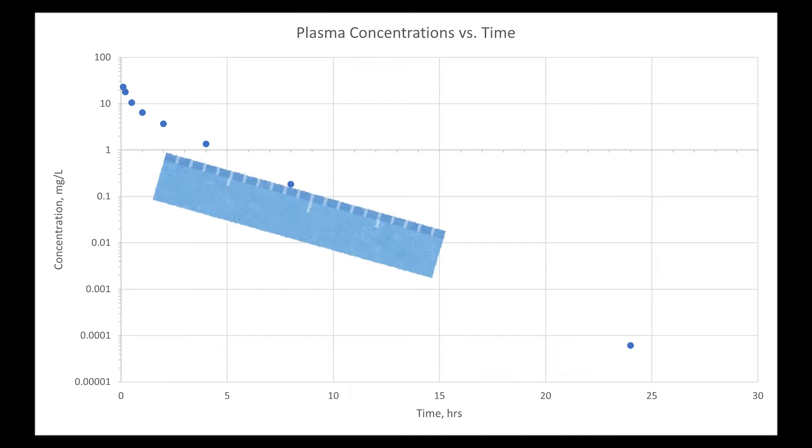So I'll take out my ruler and then just use Excel to draw the straight line. The intercept is about 10 mg per liter. This would be b.